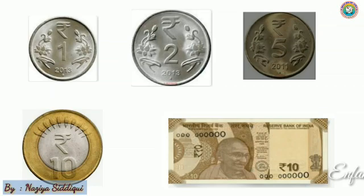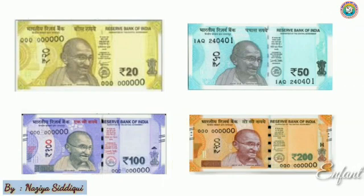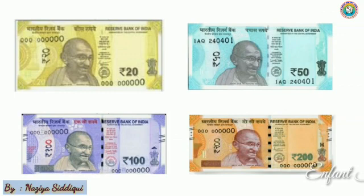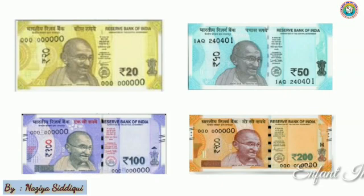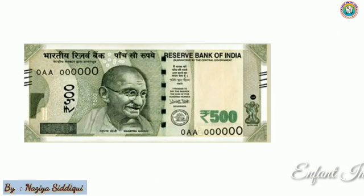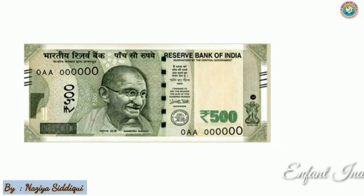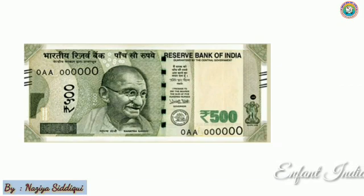There is also a 10 rupee note — this is the 10 rupee note. Next picture is 20 rupees. Next one is 50 rupees. This is 100 rupees. This is 200 rupees. And this note — what is its total amount? Good — 500 rupees. Okay students, these were some notes.